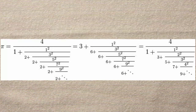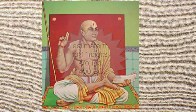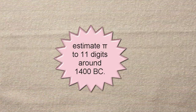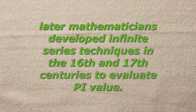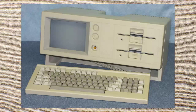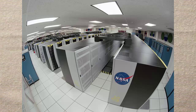Later, mathematicians discovered several generalized continued fractions. Madhava, an Indian mathematician, used infinite series to estimate pi to 11 digits around 1400 AD. Later mathematicians developed infinite series techniques in the 16th and 17th centuries to evaluate the pi value. After the discovery of computers, using iterative methods we became able to calculate pi up to millions of digits. But today, using supercomputers, we are able to calculate pi up to two quadrillion digits after the decimal point.